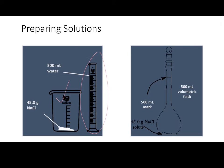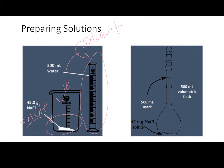Typically your solvent is going to be measured out in the graduated cylinder and you're typically going to add your solute to the beaker. You want to have a beaker that is large enough to hold the total volume of your solution. You would do your calculations for your molarity, add your solute to the beaker, then subsequently add your solvent into the beaker and stir the solution so that everything can dissolve.